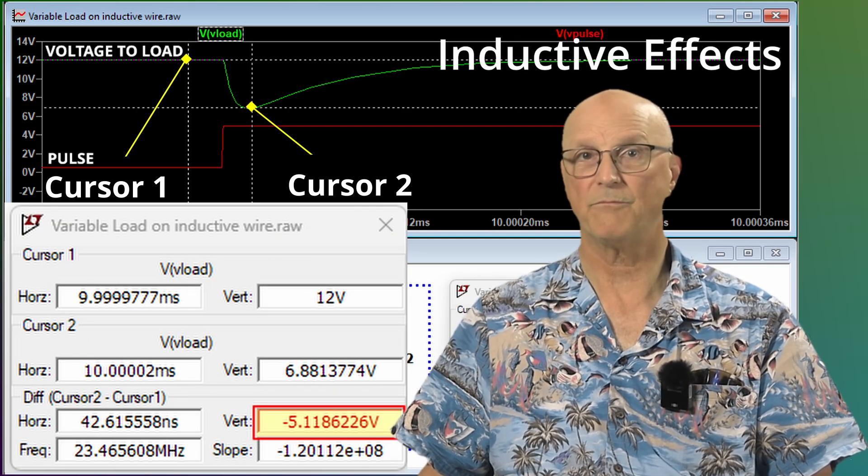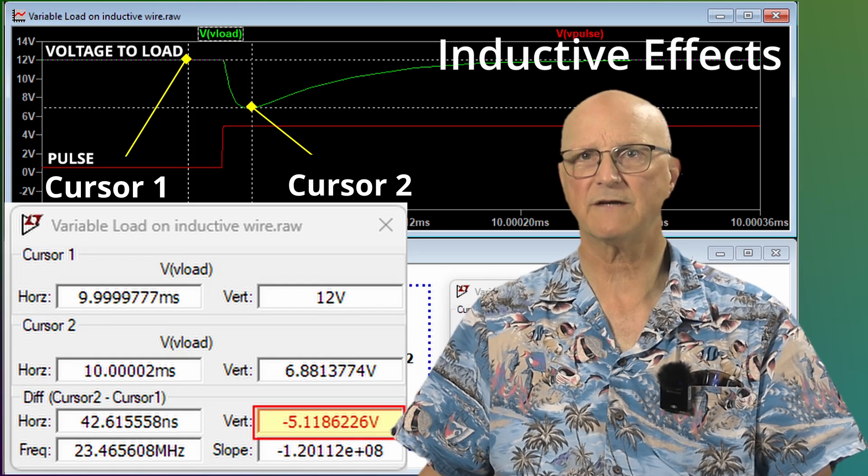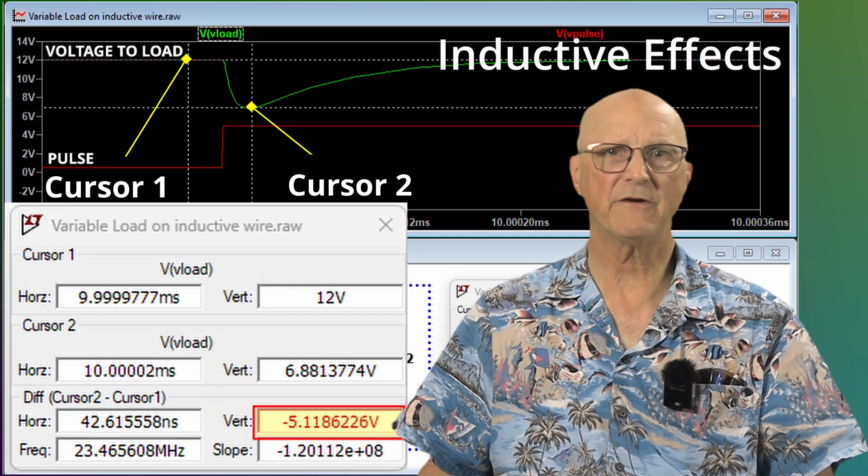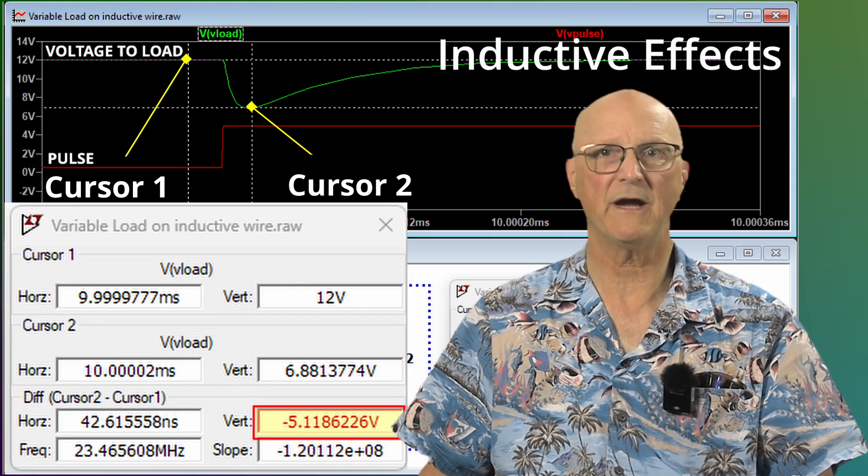Thus, for pulse applications, use larger conductors to reduce the inductance of the wires, providing better instantaneous current supply to the circuit.